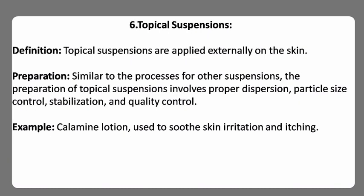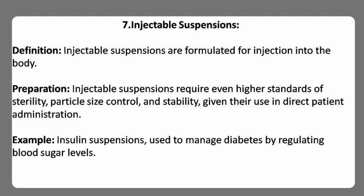Sixth, topical suspensions — applied externally on the skin. Preparation involves proper dispersion, particle size control, stabilization, and quality control. Example: calamine lotion used to soothe skin irritation and itching. Seventh, injectable suspensions — formulated for injection into the body. These require even higher standards of sterility, particle size control, and stability given their use in direct patient administration. Example: insulin suspensions used to manage diabetes by regulating blood sugar levels.